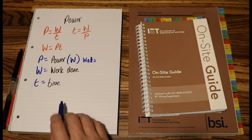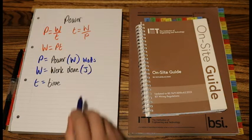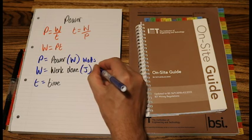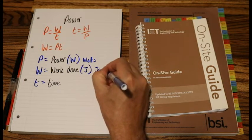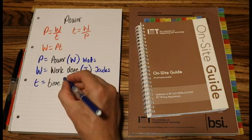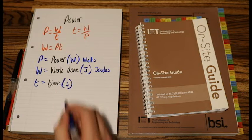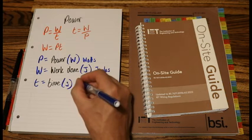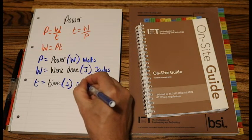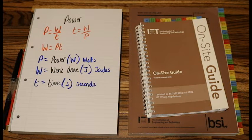Work done is measured in joules, a capital J. And the SI unit for T is a lowercase s, seconds.